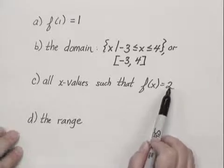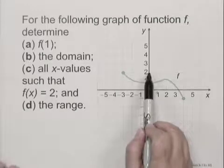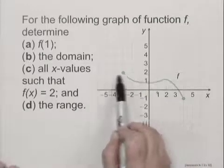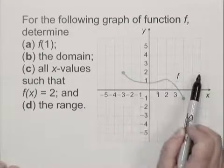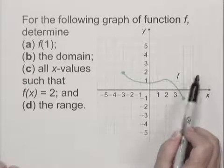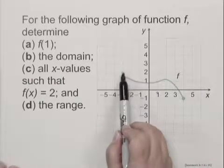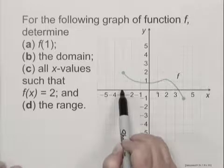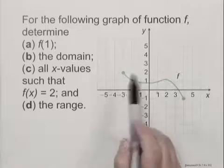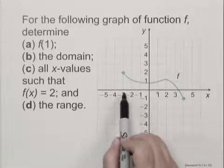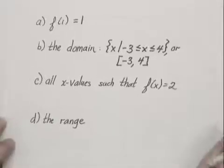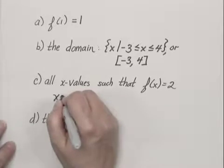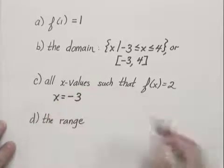So we start by looking at 2 on the vertical axis. We locate 2 on the vertical axis, and we look left and right to see if there are any points for which 2 is the second coordinate. There's one point that's over here. We move down to the x-axis and find that the x value is negative 3. So when x is negative 3, f of x is 2. You can write that x has to be negative 3.